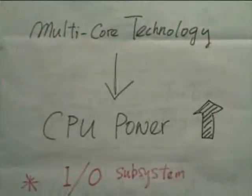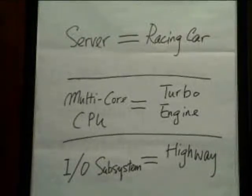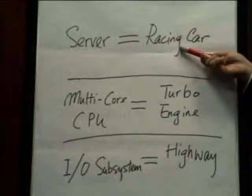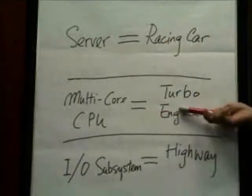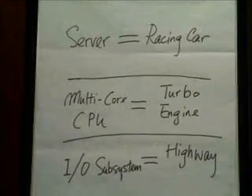In order to achieve maximized server performance, we also need to focus on the IO subsystems. Let's imagine there is a racing car with a super turbo engine. It is impossible to achieve the greatest power of the engine on a busy road due to slow traffic. In order to achieve its top speed, a highway must be in place. Server development is the same — the server is the racing car, the multi-core CPU is the turbo engine, and the IO subsystem is the highway. A high-throughput IO subsystem can avoid IO bottleneck.